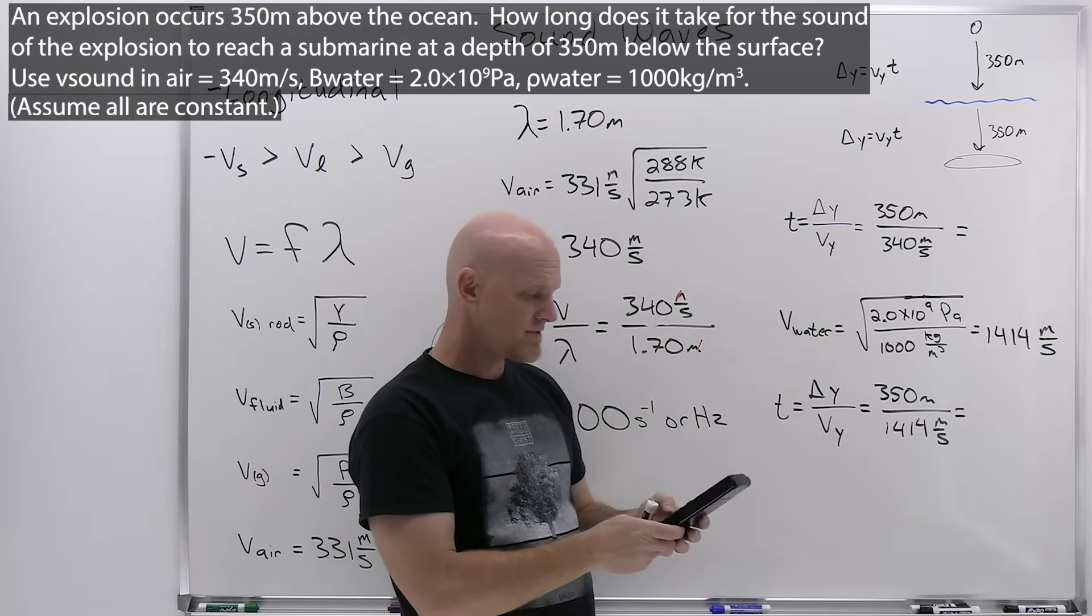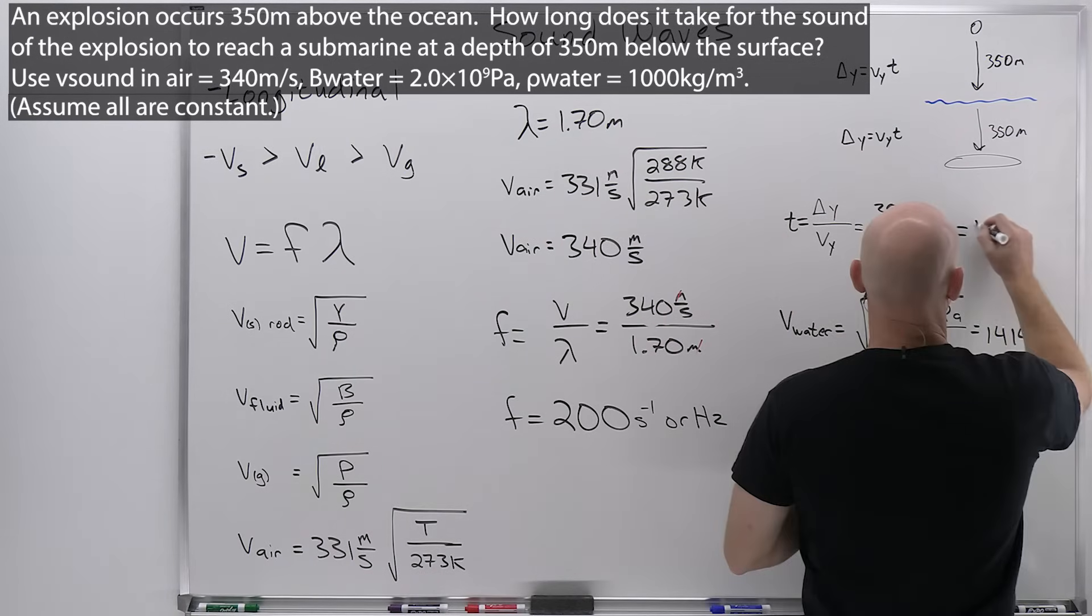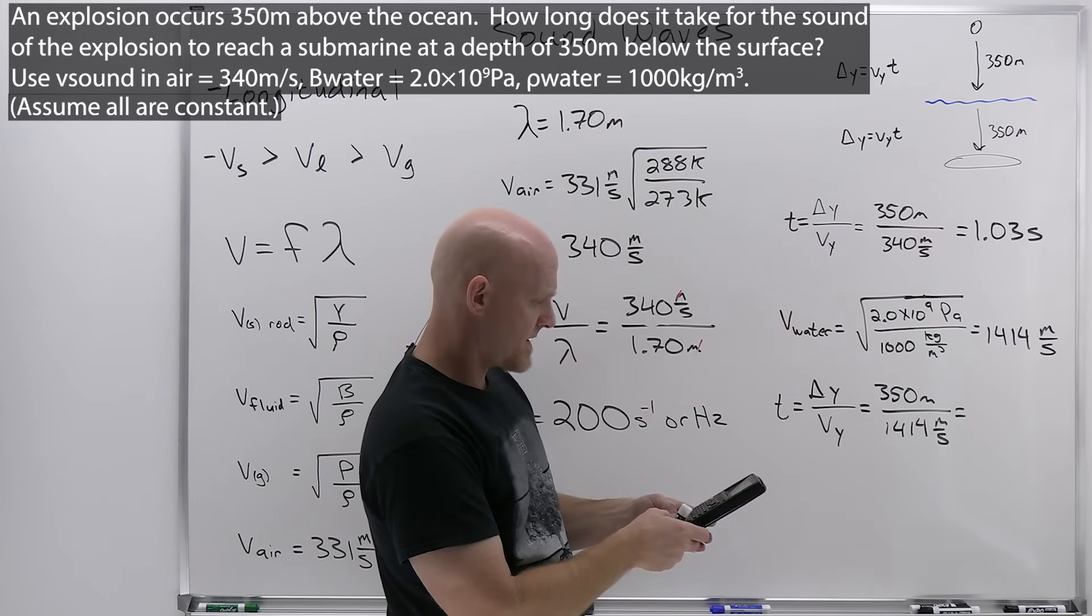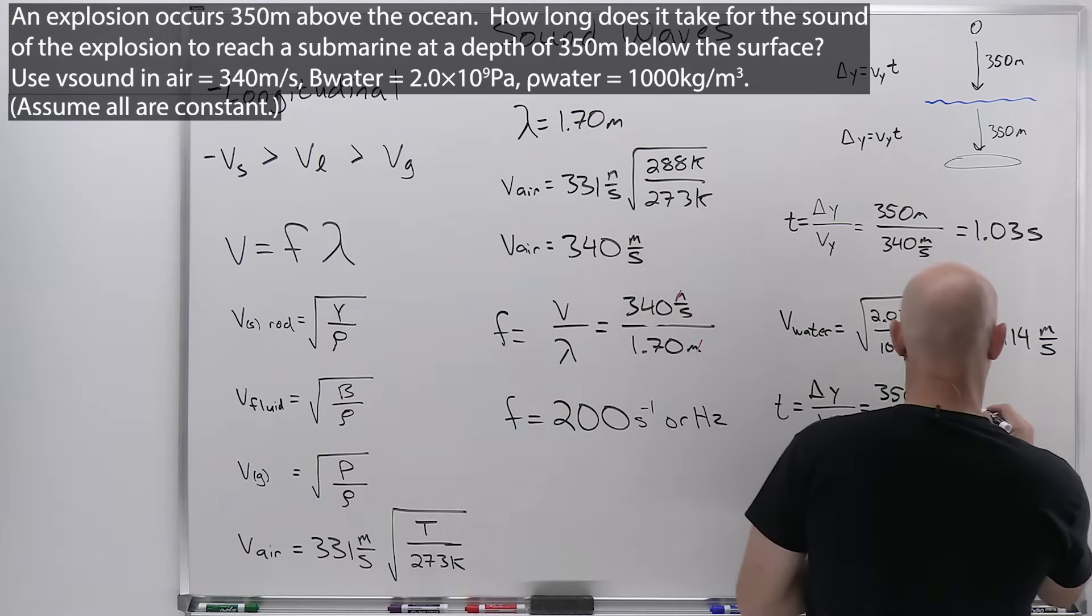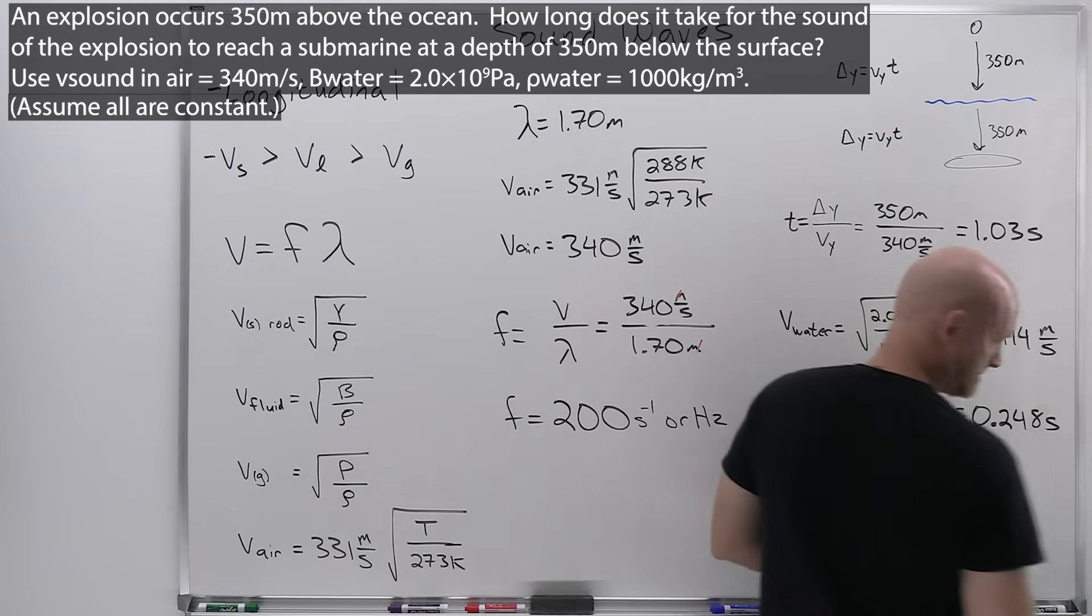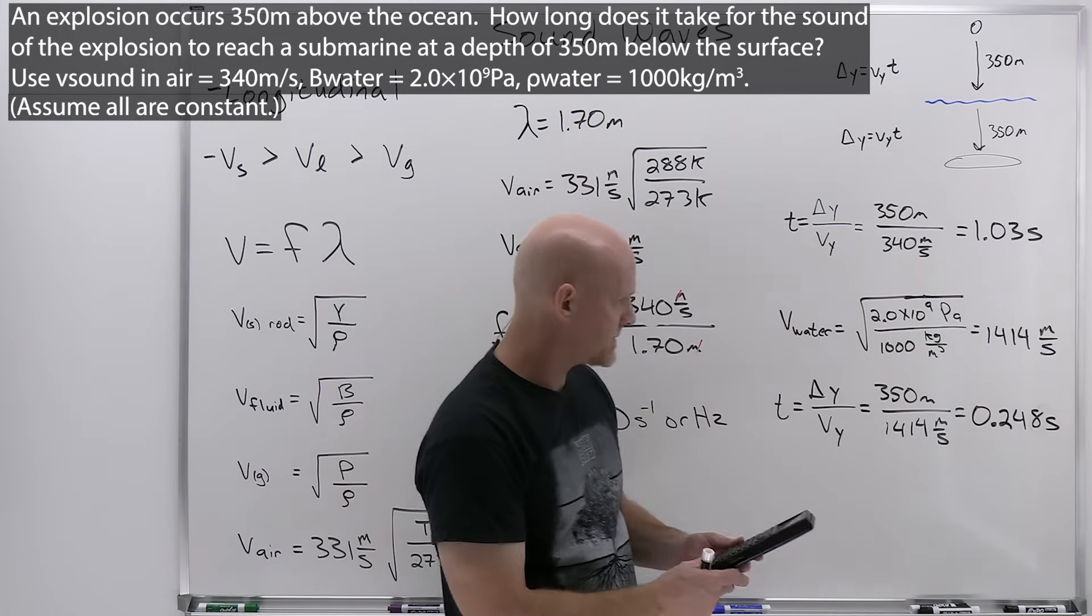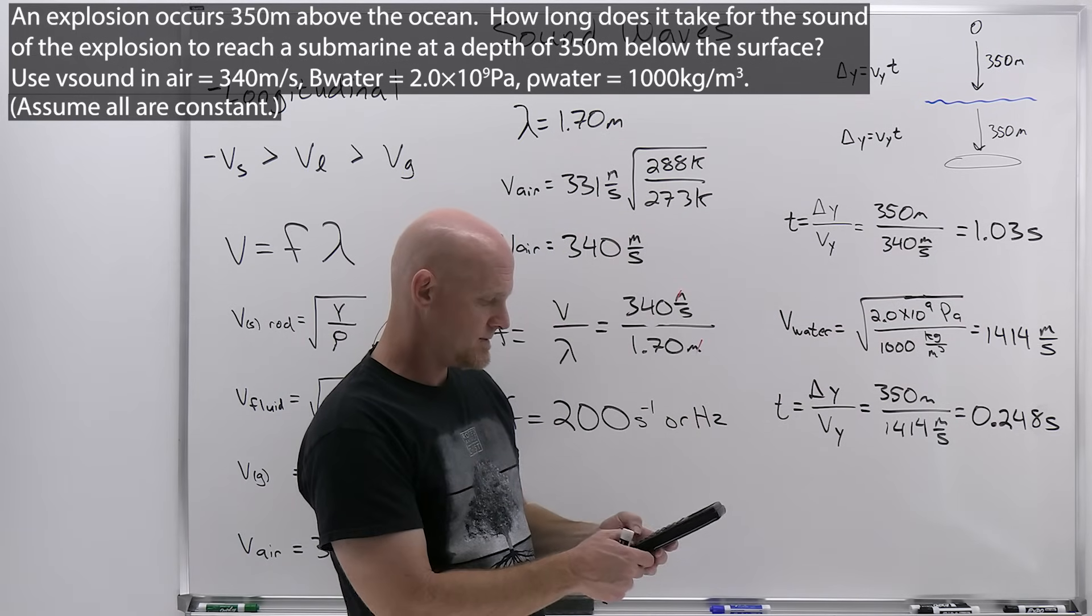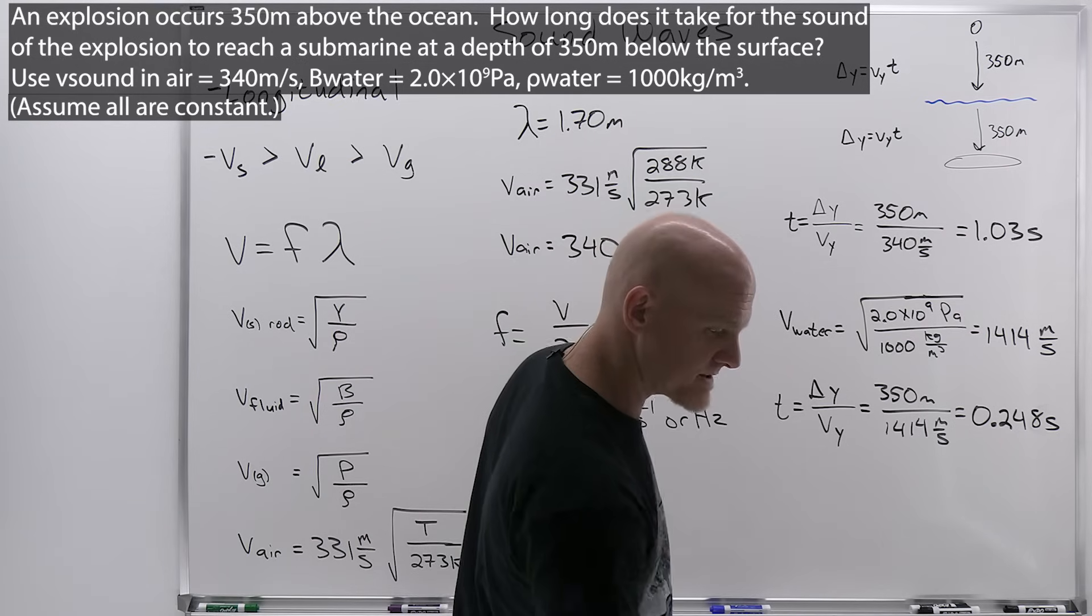So, first off, we've got 350 divided by 340. We're going to get 1.03 seconds. And then down here, we've got 350 divided by 1,414, and we're going to get 0.248 seconds. And I'm doing this in three sig figs. We'll finish this problem off probably with sig figs, but I guess in this case, if we're adding together, the 1.03, it's going to get us 1.2775 seconds, which we'll round up at two sig figs to 1.3 seconds. That's all there is to it.